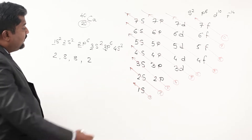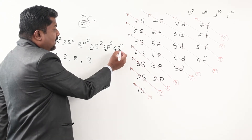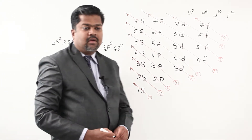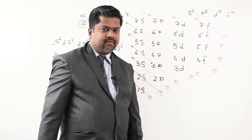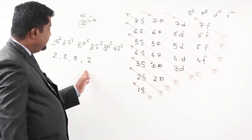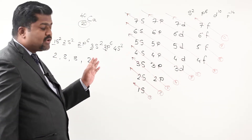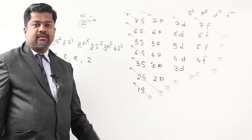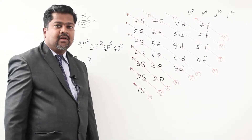Checking against the previous scheme: first shell 2, second shell 8, third shell 8, fourth shell 2 — that is 2,8,8,2 — same as before. This is the electronic configuration of calcium: 1s2 2s2 2p6 3s2 3p6 4s2.